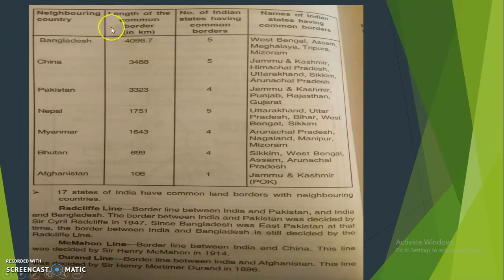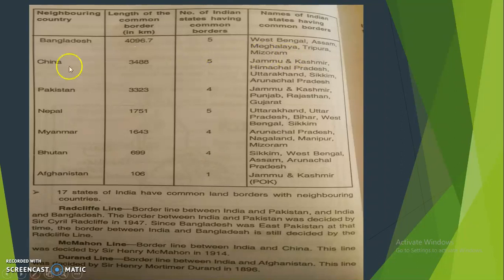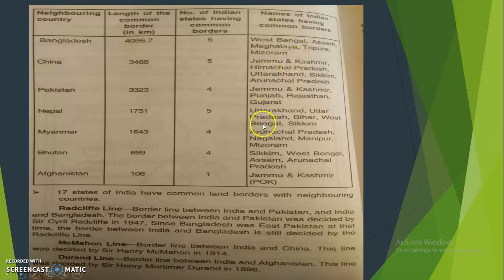Bangladesh shares the largest border with India at 4,096.7 kilometers, touching five states: West Bengal, Assam, Meghalaya, Tripura, and Mizoram. China shares the second largest border. Afghanistan shares the shortest border with India at only 106 kilometers, and the state that touches Afghanistan is Jammu and Kashmir.